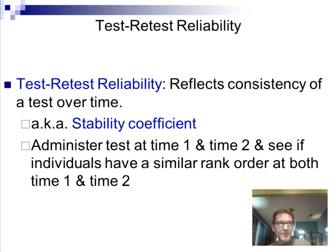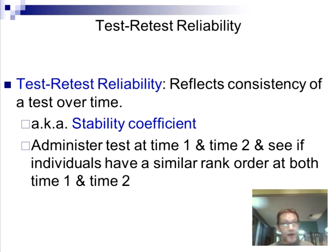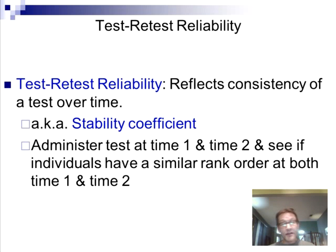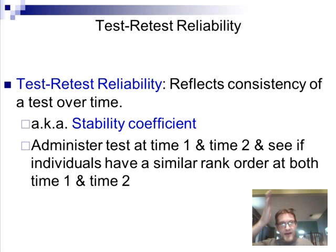Test-retest reliability is one way to establish how much reliability you have. You administer a test at two different times — time one and time two — and look at the relationship between them. You calculate a correlation between number of smiles at test one and number of smiles at test two. How related are they? How similar are these two results? That's test-retest reliability.